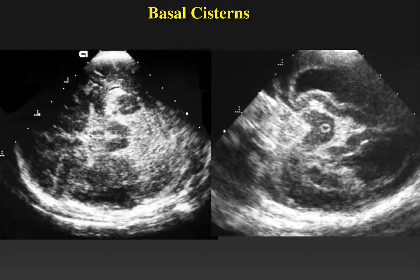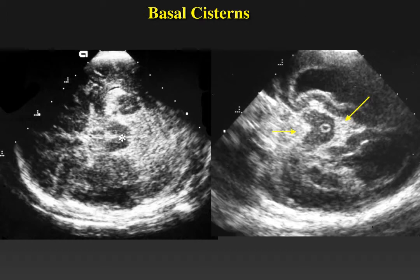The image on the left is an axial image obtained at the level of the cerebral peduncles. The asterisk shows the midbrain and cerebral peduncles with a thin and echogenic rim of basal cisterns surrounding the midbrain — the normal appearance. The image on the right shows expansion of the basal cisterns with blood in a baby with subarachnoid hemorrhage, with increased echogenicity filling the basal and interpeduncular cisterns. The blue arrow shows a dilated aqueduct of Sylvius surrounded by a thick rim of ependyma, consistent with ependymitis.